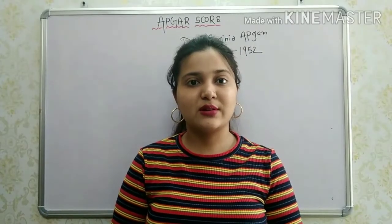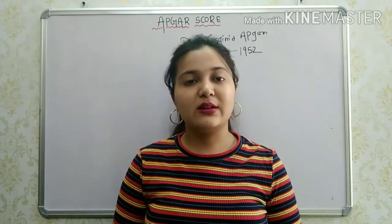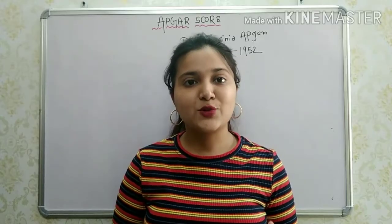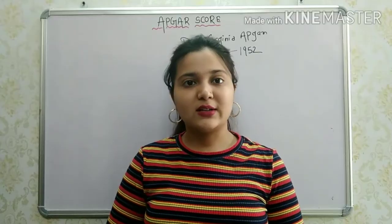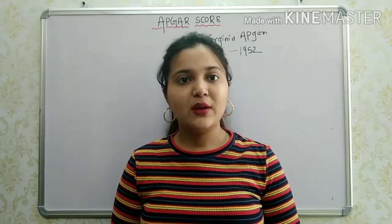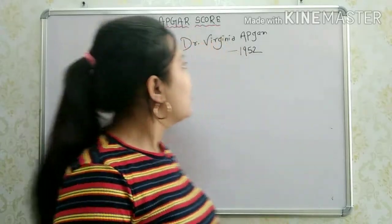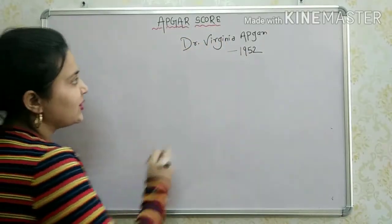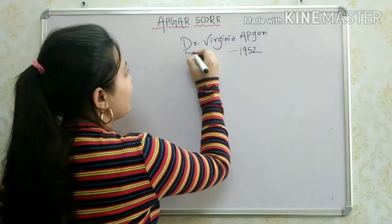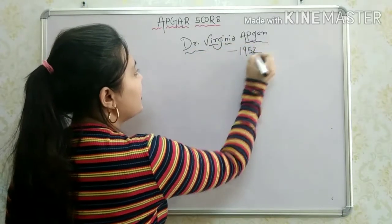GAR score is used to assess respiratory status, circulatory status, and neurological status. So let's start today's topic. First of all, who invented GAR score? Dr. Virginia Apgar invented the GAR score in 1952.